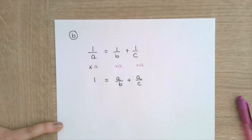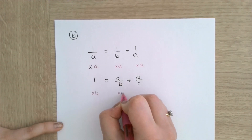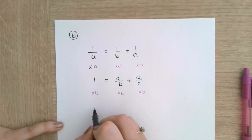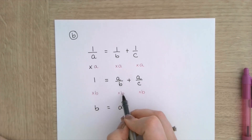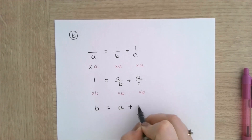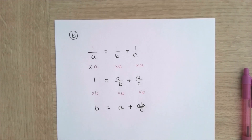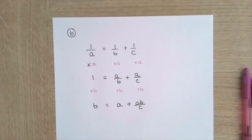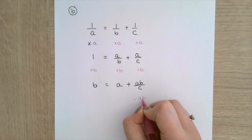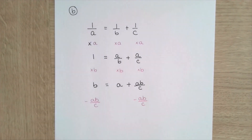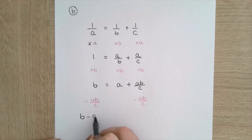Now what I'm going to do is multiply everything by b. That's going to leave me with b is equal to a — because the b in the denominator cancels out, which is the whole point of multiplying by b — plus ab all over c. I'm now going to rearrange to get all my b's on one side, so I'm going to subtract ab over c from both sides, leaving b minus ab over c is equal to a.